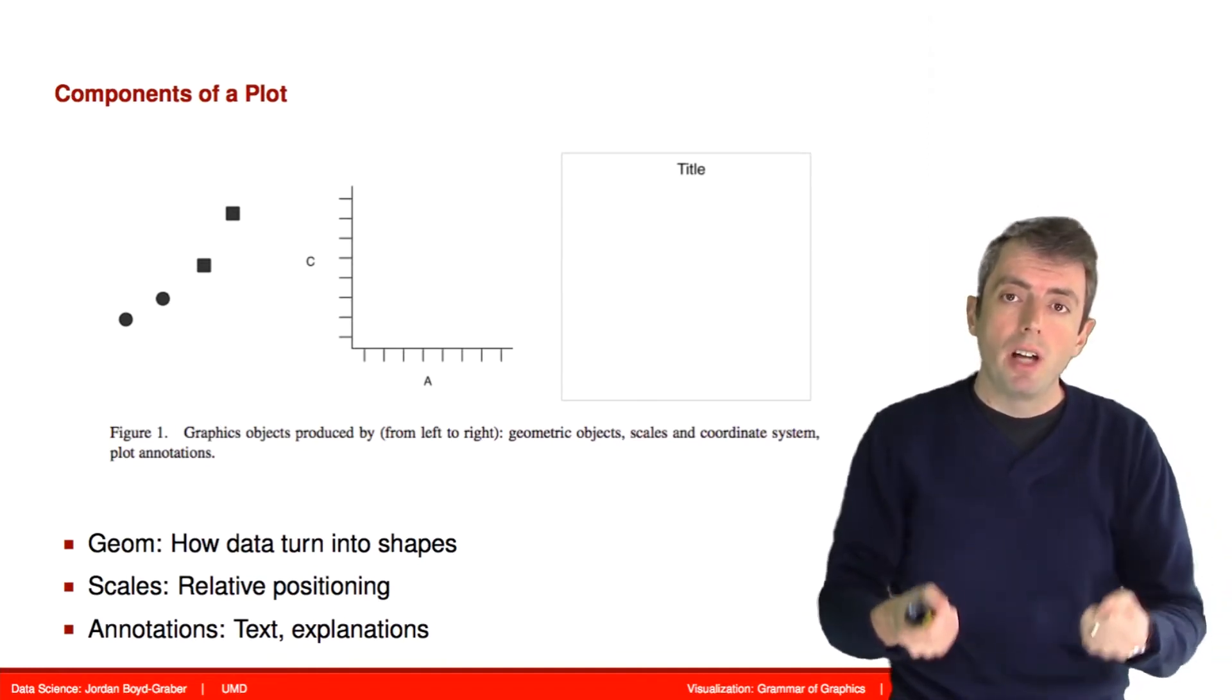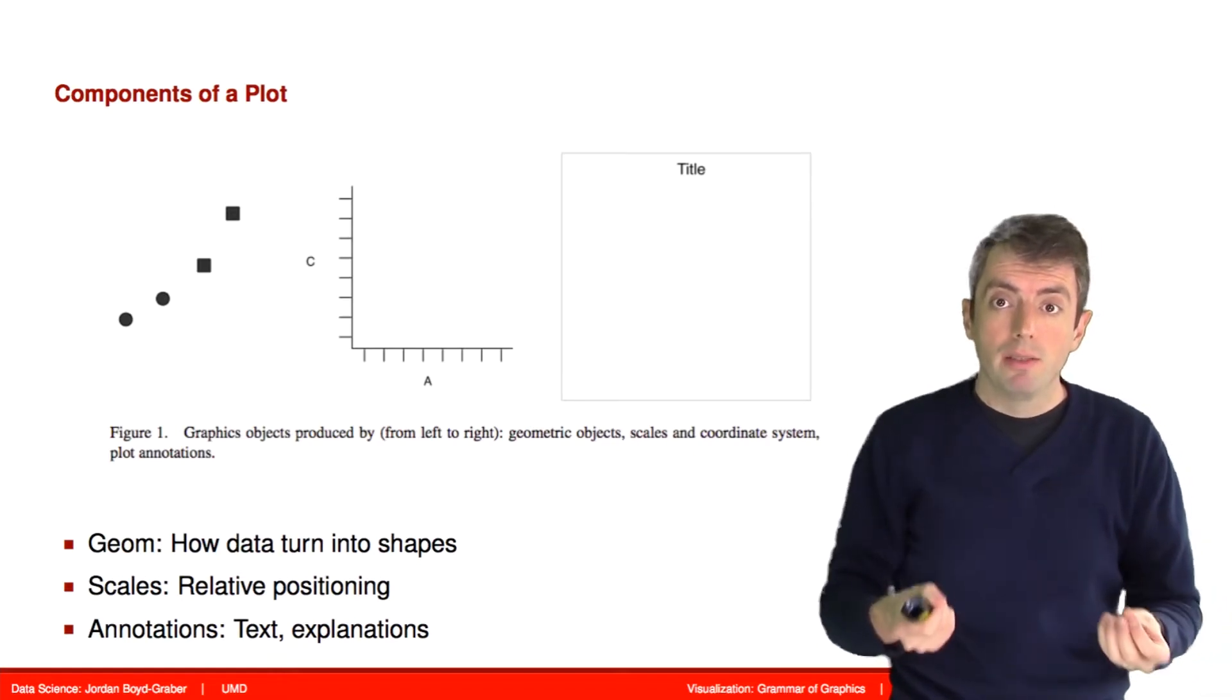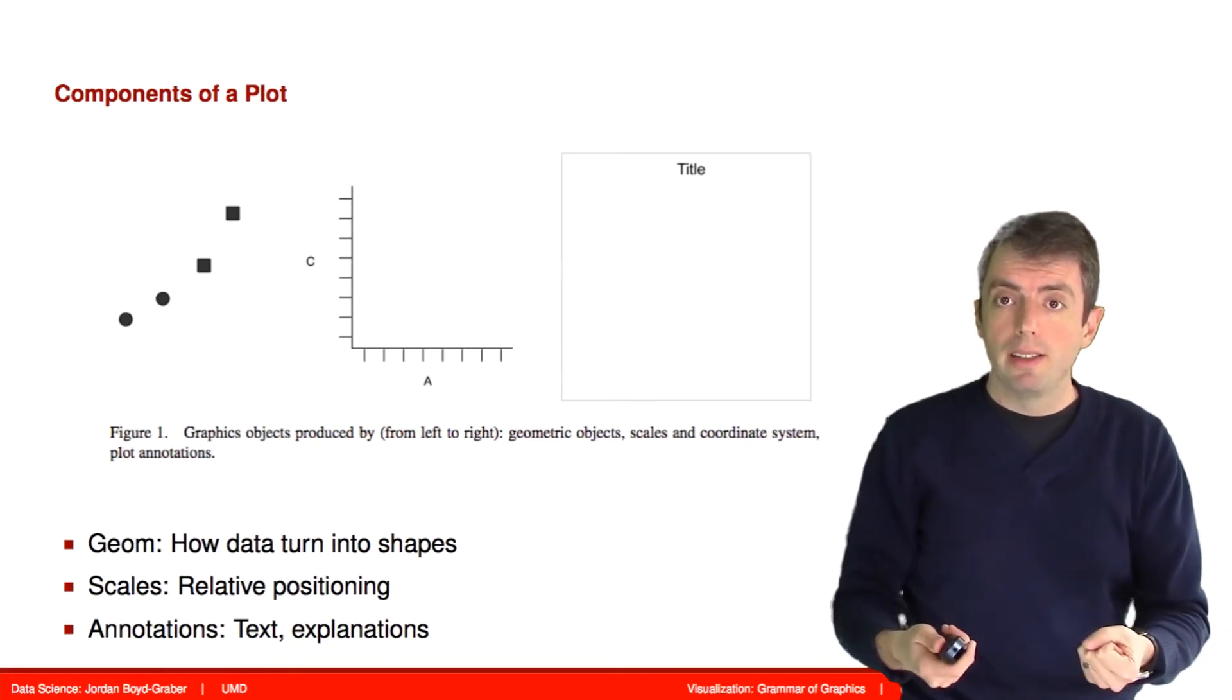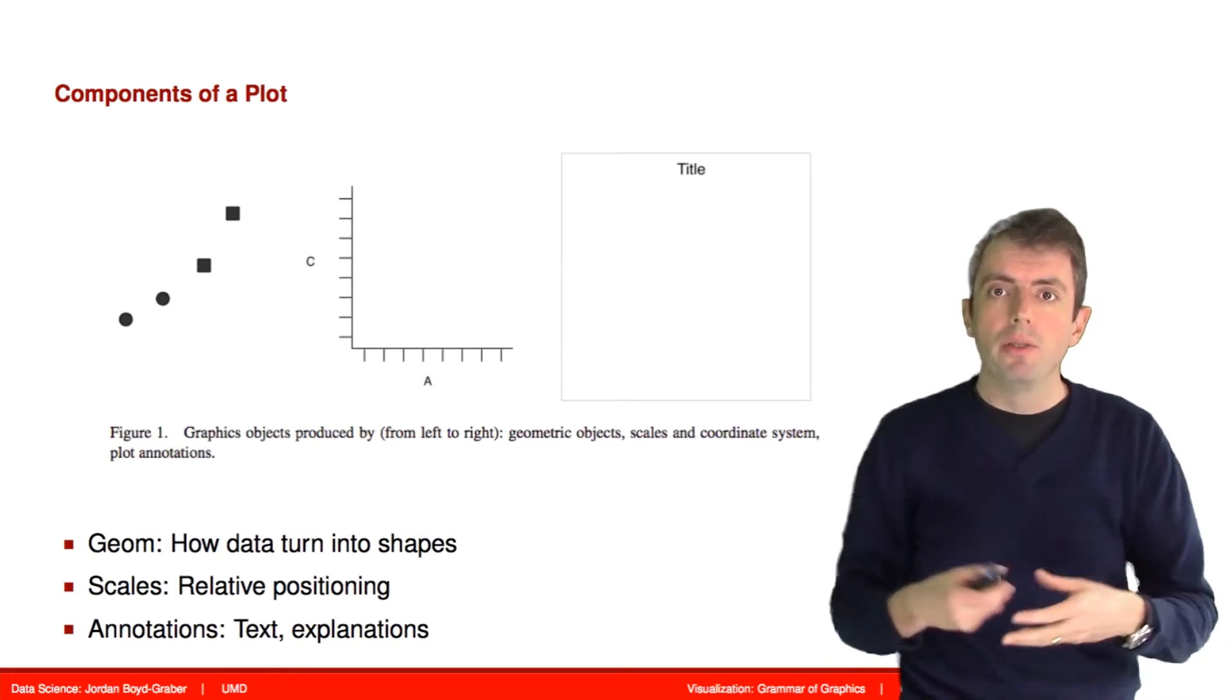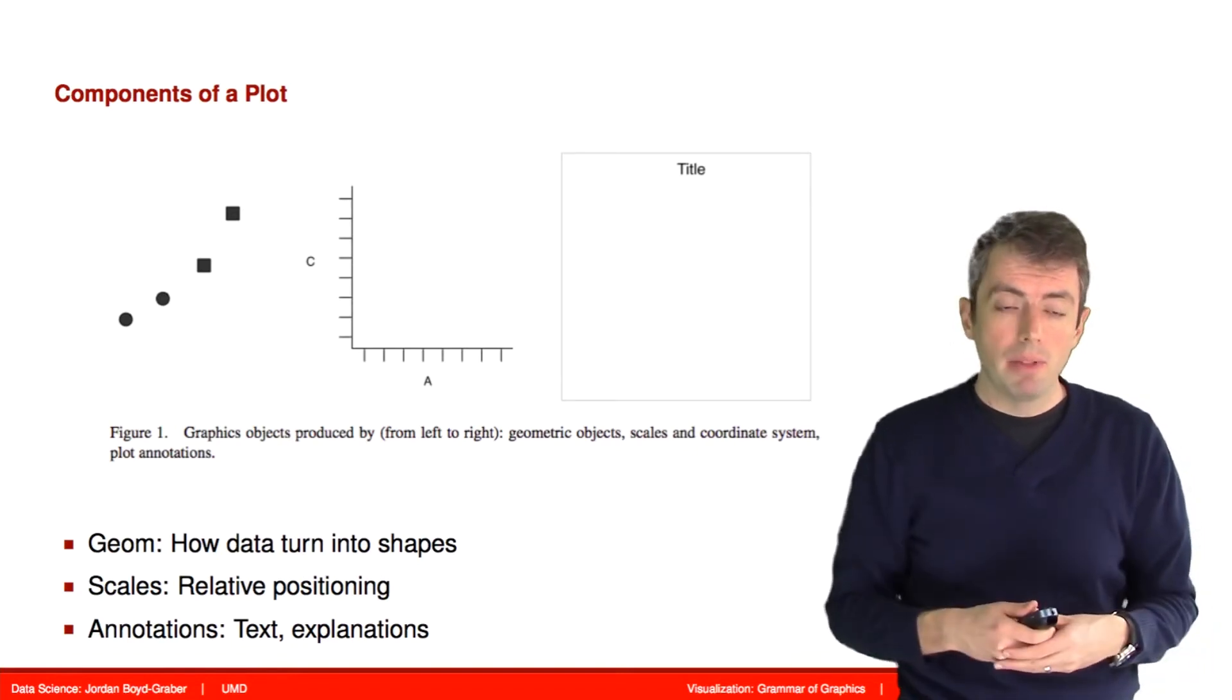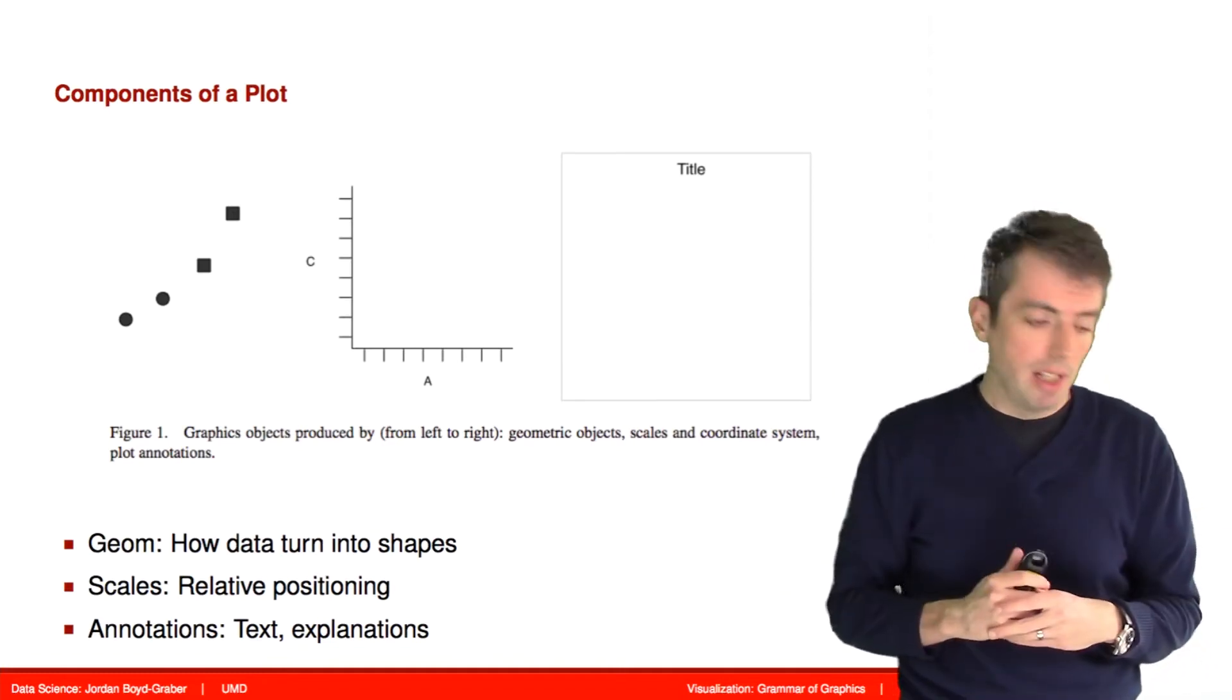In the language that ggplot2 and plot9 use, these are called geometries. The geometries are the shapes of the images that will be displayed on your screen. You can also have things like coordinate systems that tell the values of the elements, and annotations like the axes on a plot.